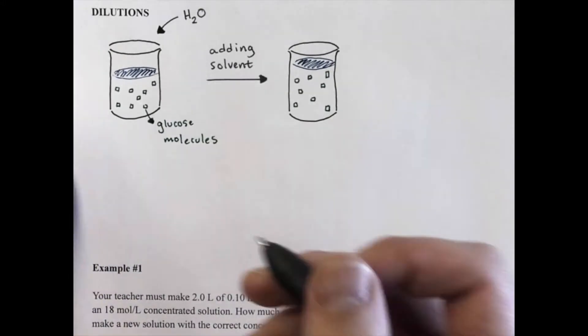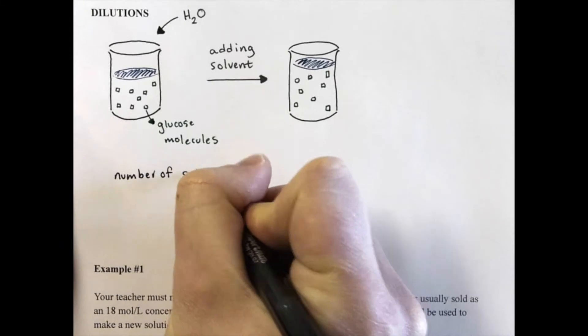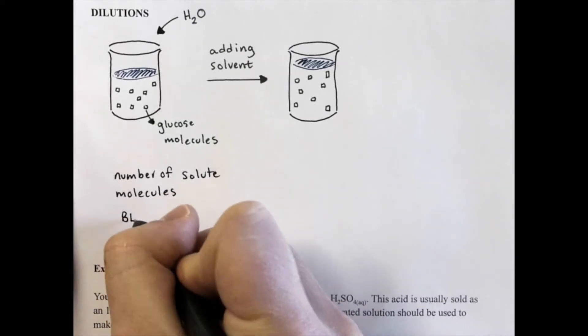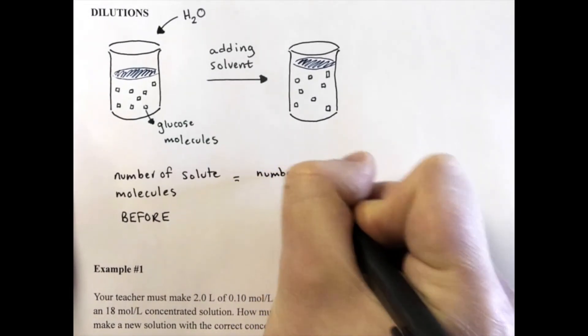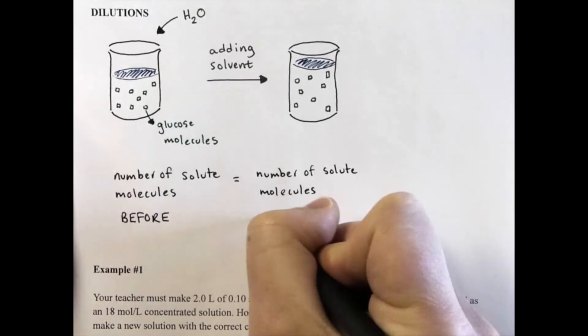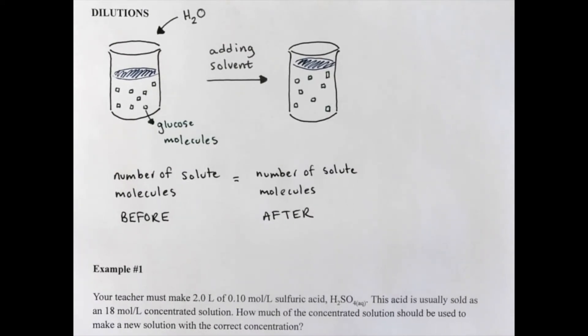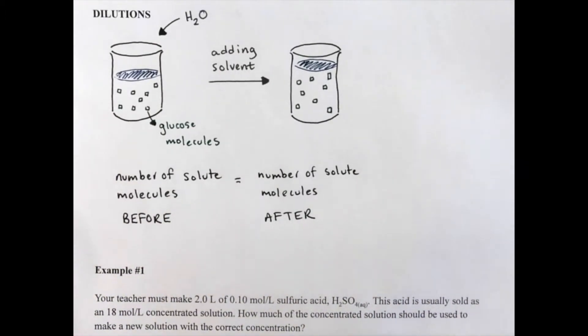So this is an important thing to remember with dilution: the number of solute molecules before the dilution has to equal the number of solute molecules after dilution. So those solute molecules remain in the same quantity. Now in chemistry we don't talk about molecules because there's a whole buttload of molecules. So what we need to do, what we talk about in terms of numbers of molecules, is actually moles.